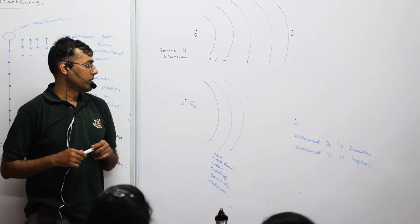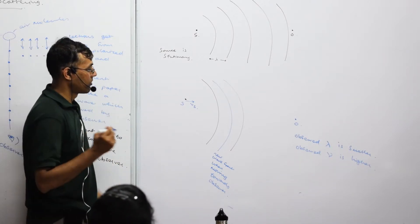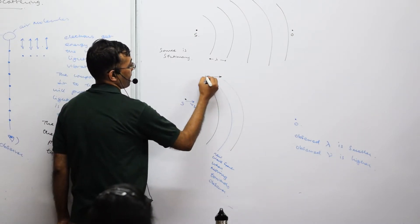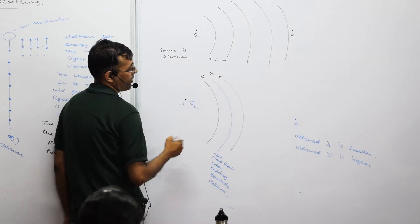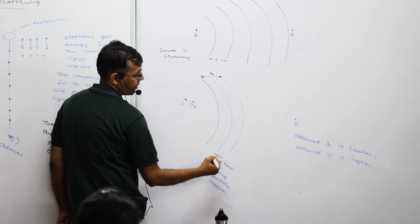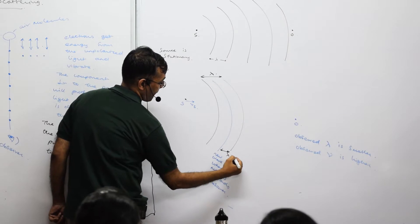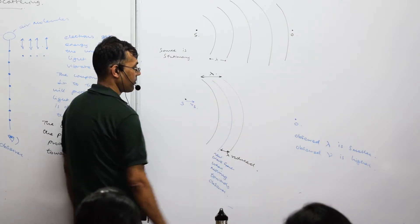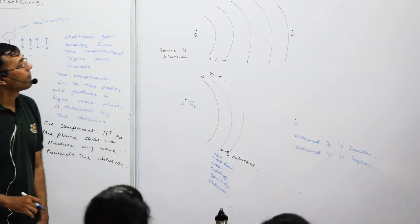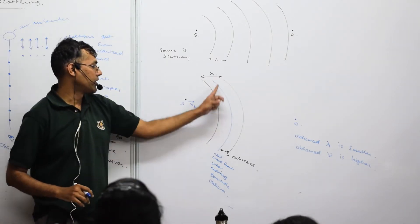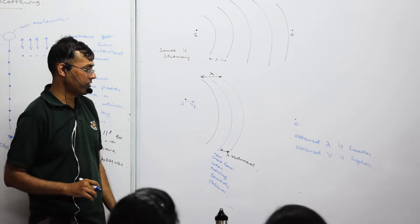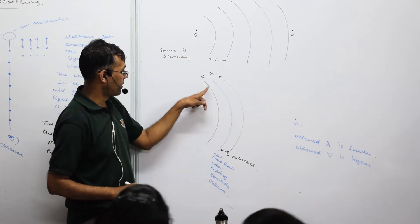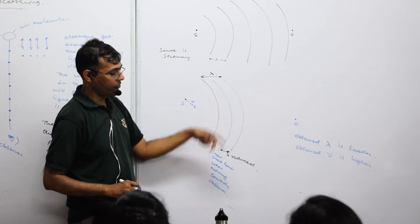Is that clear? So this is lambda, and this is the reduced lambda. Take it down: this is the original lambda and this is the reduced lambda. You should show some kind of change — a dotted line for the original and the actual wave for the new position.